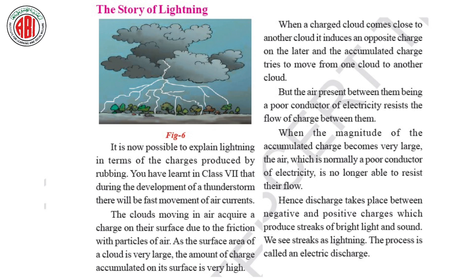Air is a poor conductor of electricity and is no longer able to resist this flow. Hence, discharge takes place between negative and positive charges, which produces streaks of bright light and sound. We see these streaks as lightning. The process is called electrical discharge.